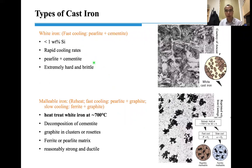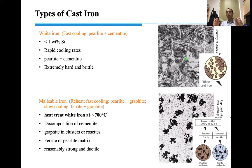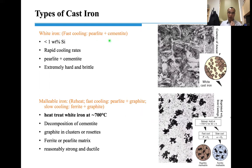White iron is produced by faster cooling — no moderate or slow cooling. With faster cooling, the final microstructure is perlite plus cementite, because there is not enough time for the cementite to decompose into ferrite and graphite. This microstructure is extremely hard and brittle.